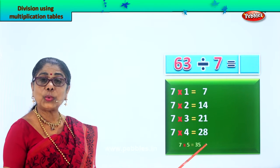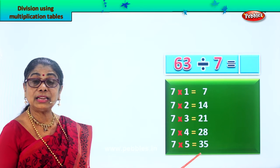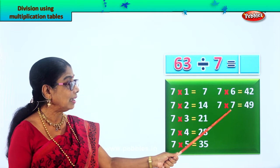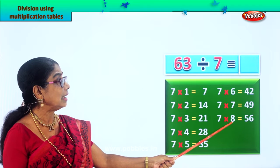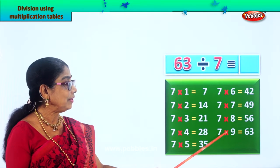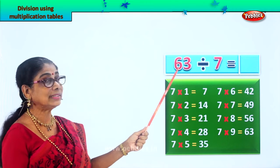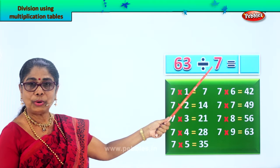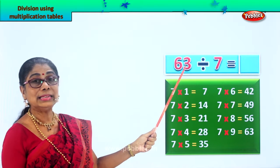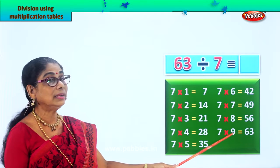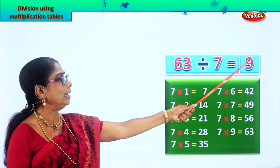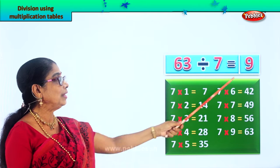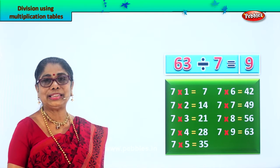7 fours are 28, 7 fives are 35, 7 sixes are 42, 7 sevens are 49, 7 eights are 56, 7 nines are 63. We have 63 to be divided equally into 7 groups — how many do we get? 63 divided by 7 gives you the answer 9. In reverse multiplication, 9 sevens are 63, and 7 nines are 63. So we learn to find the answer using multiplication tables.